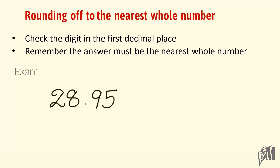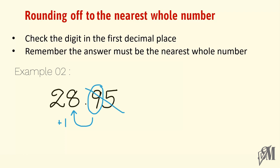Now look here — 28.95 is to be rounded off to the nearest whole number. The digit at the first decimal place is 9. Since 9 is greater than 5, we add 1 to the digit in the units place — that is, we add 1 to 8 — and replace the digits after the decimal point with 0. Our answer becomes 29.